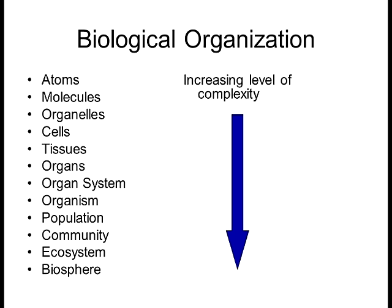Though there are over 100 elements — 92 naturally occurring — of those 92, there are only six found in every living organism. I like to put them in a mnemonic word called SCHNAPPS: carbon, hydrogen, nitrogen, oxygen, phosphorus, and sulfur. These six elements, or atoms, will be found in every living organism.